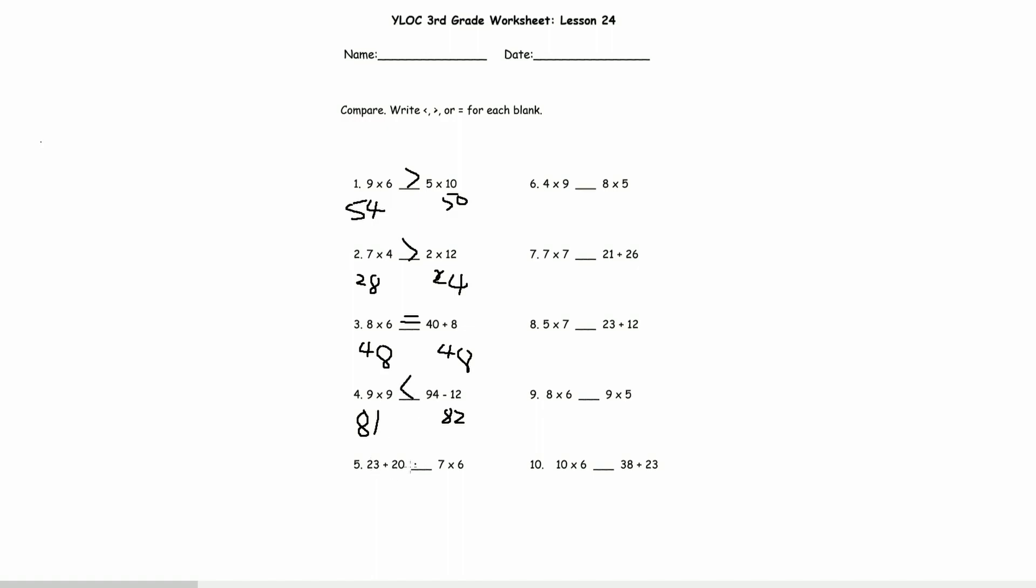23 plus 20, there's no, it's a 0, so that would be 3. And 2 plus 2 is 4. 7 times 6 is 42. And 43 is greater by 1.